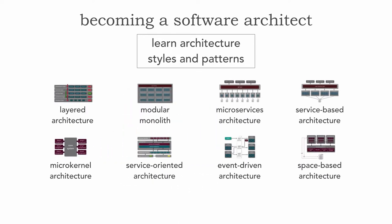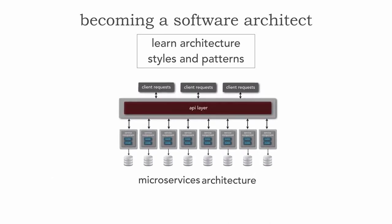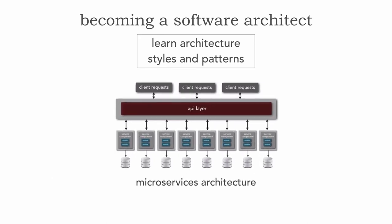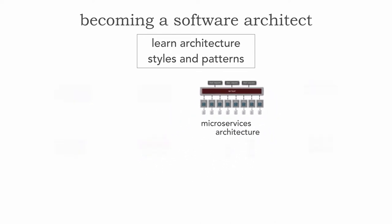On the distributed side we have everybody's well-known cool-kid favorite — microservices. This is a highly distributed architecture style where we partition our system into separately deployed units of software almost at a function level, where each service is single-purpose, separately deployed, and does one thing really well, all owning its own data. It's a very unique architecture style and very difficult to implement.